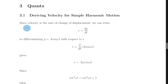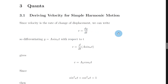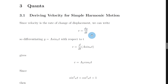We can start by saying that since velocity is the rate of change of displacement, we can write that v equals dy by dt. So instead of writing v equals ds by dt, we're using y to represent the displacement of an object undergoing SHM. So we've got velocity equals the rate of change of displacement, v equals dy by dt.